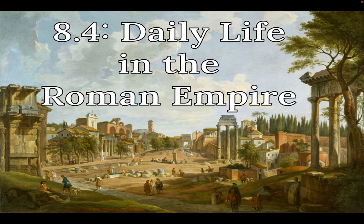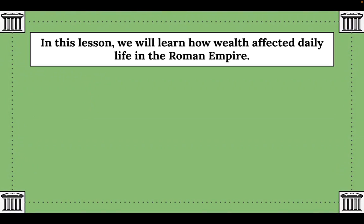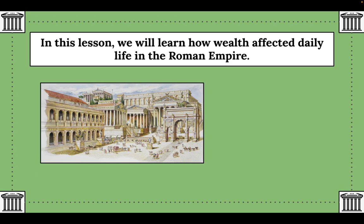Hello class, Mr. Fino here. This is Unit 8, Lesson 4 on daily life in the Roman Empire. In this lesson we will learn how wealth affected daily life in the Roman Empire — meaning how much money people had — so there would be a stark difference in the lives of the rich versus the poor.